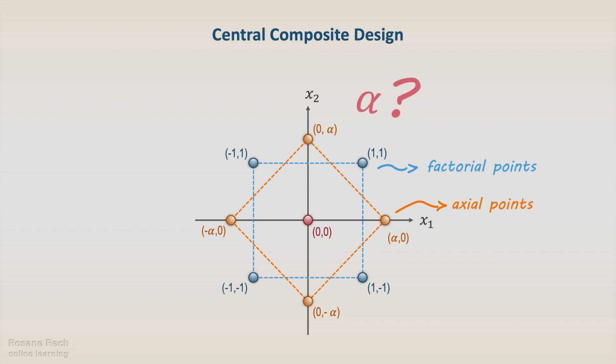But how to calculate the alpha value? Using two axial points and the central points, we can draw a right triangle with hypotenuse equal to 2 and legs equal to alpha. The length of the hypotenuse is the difference between the high and low levels of the coded variables in the 2 to the power of k design, two units.